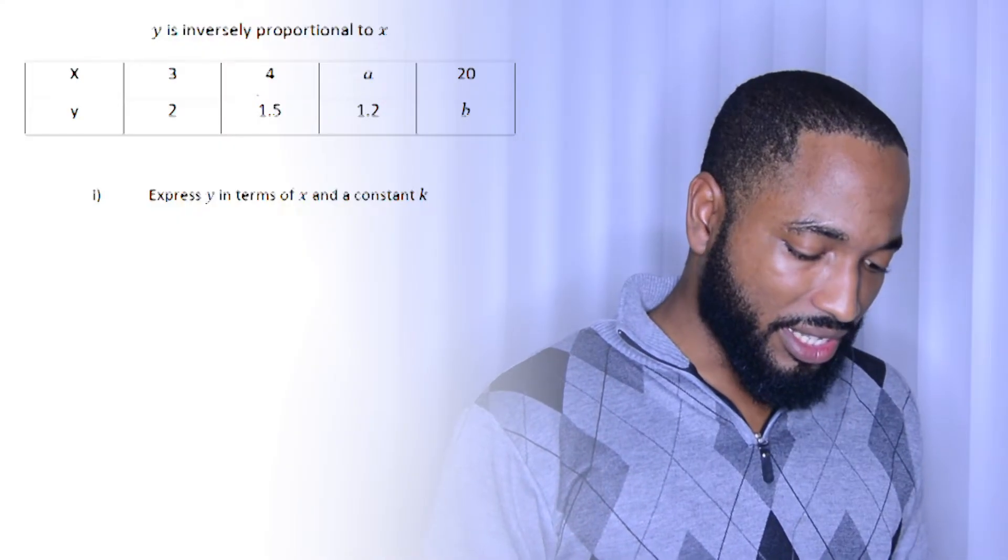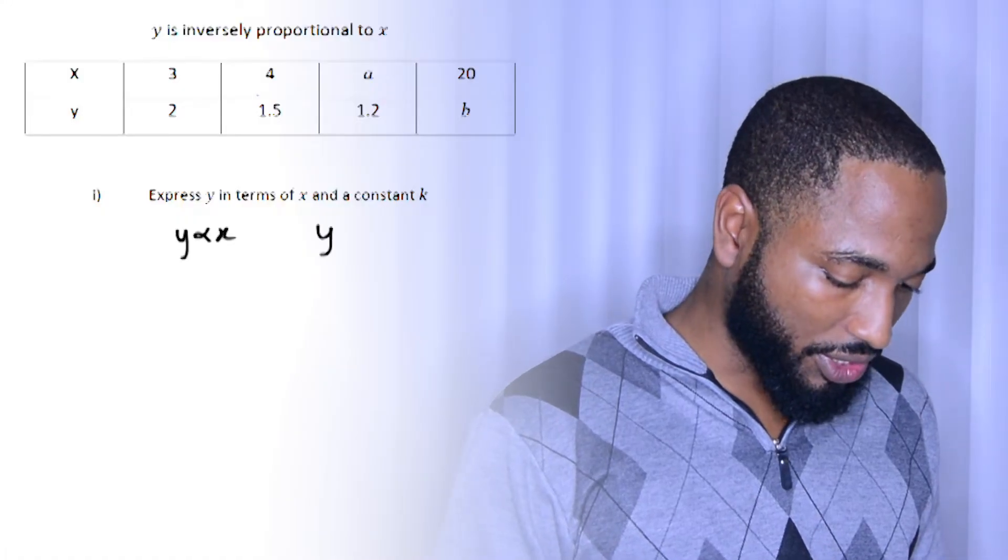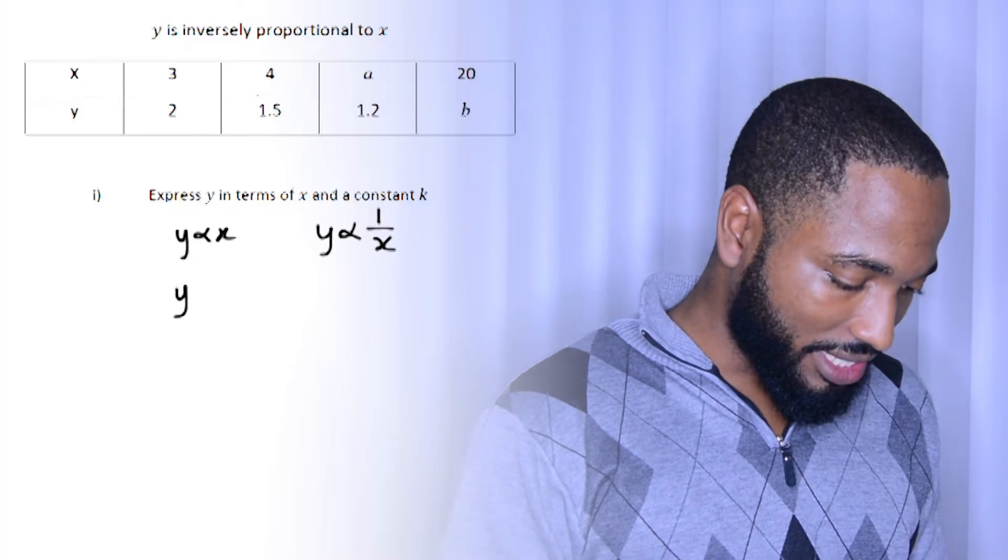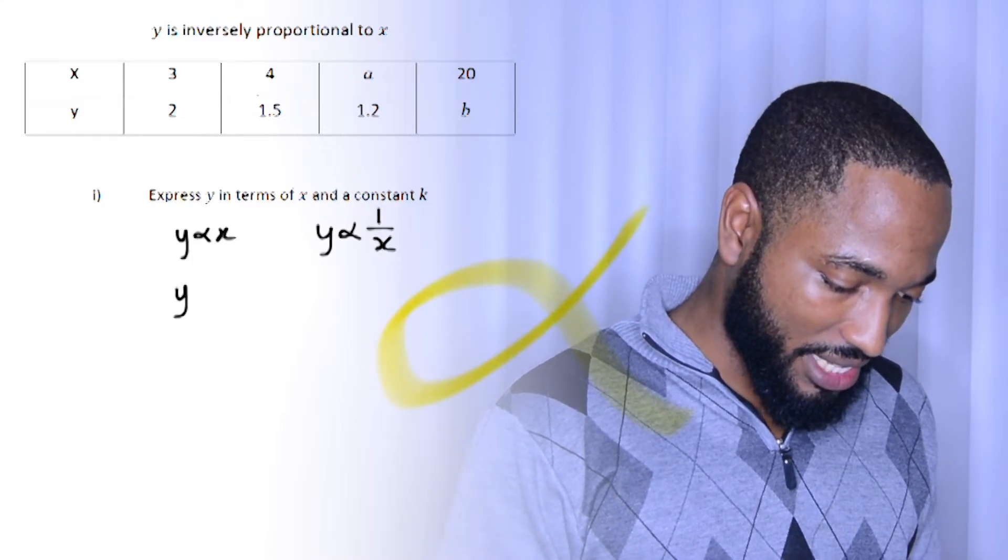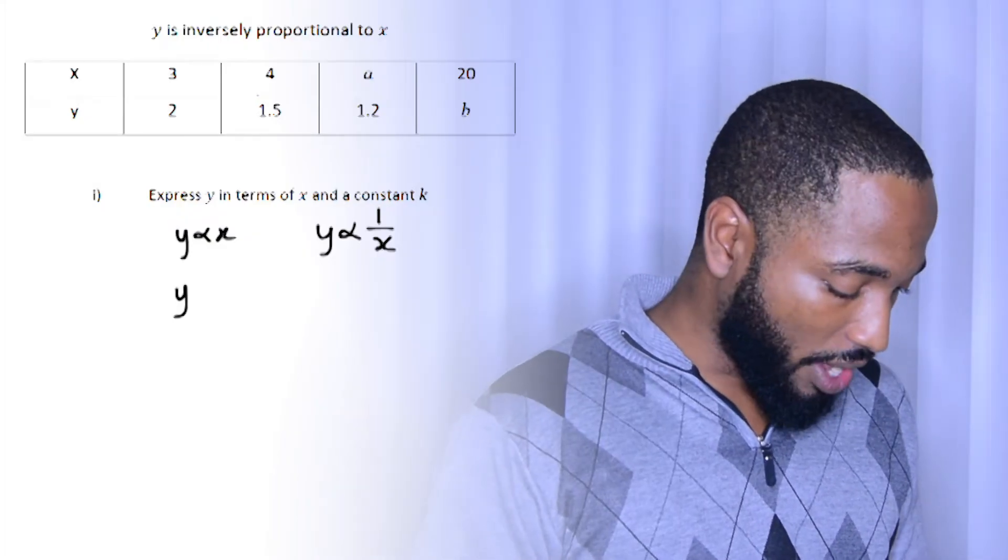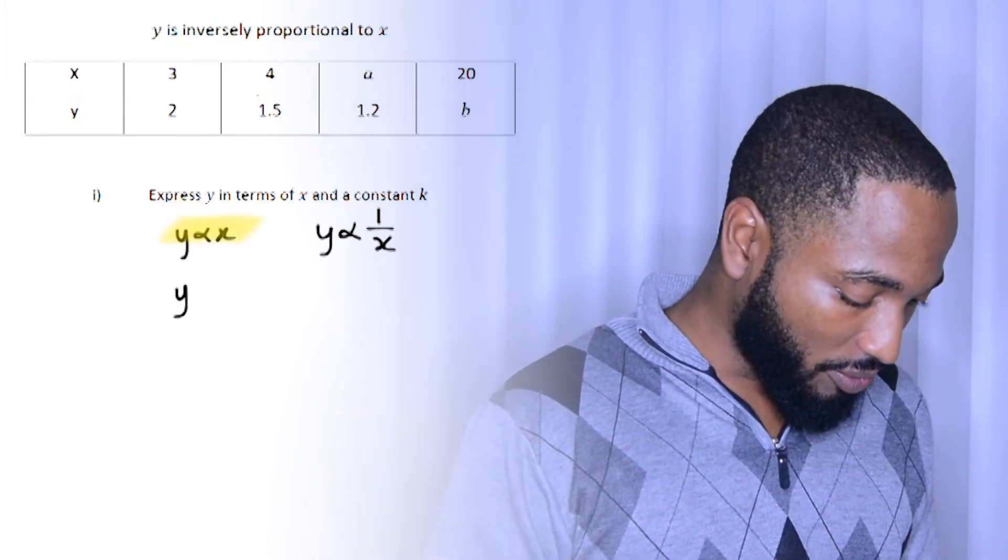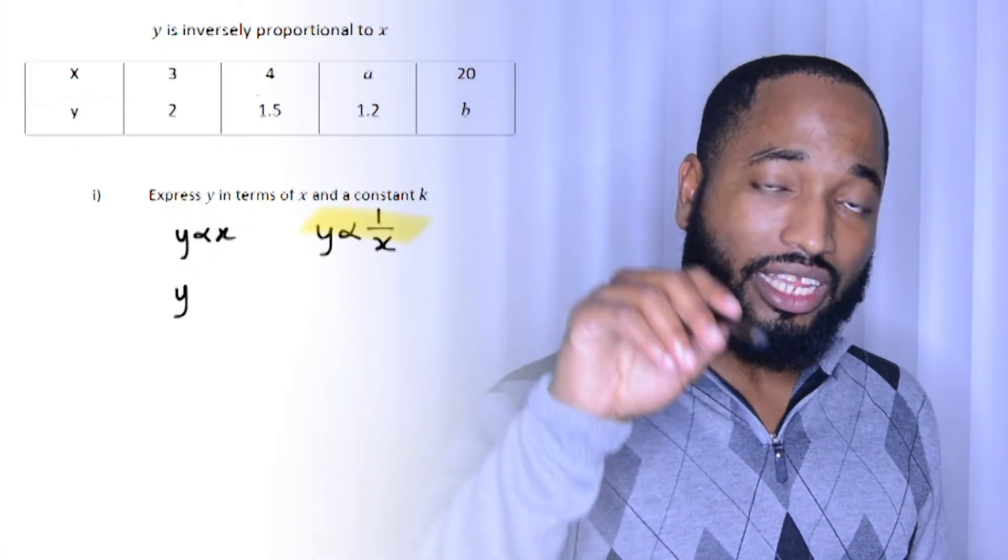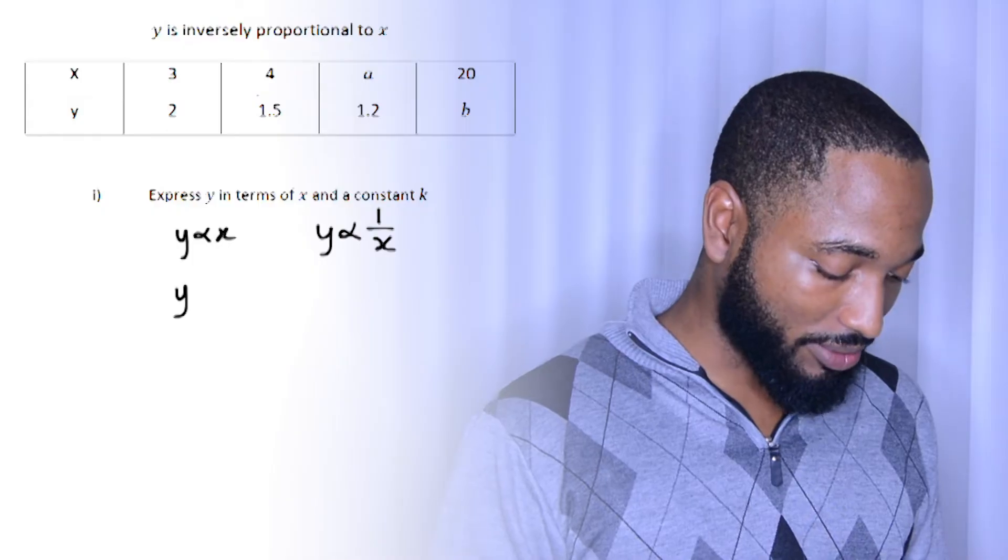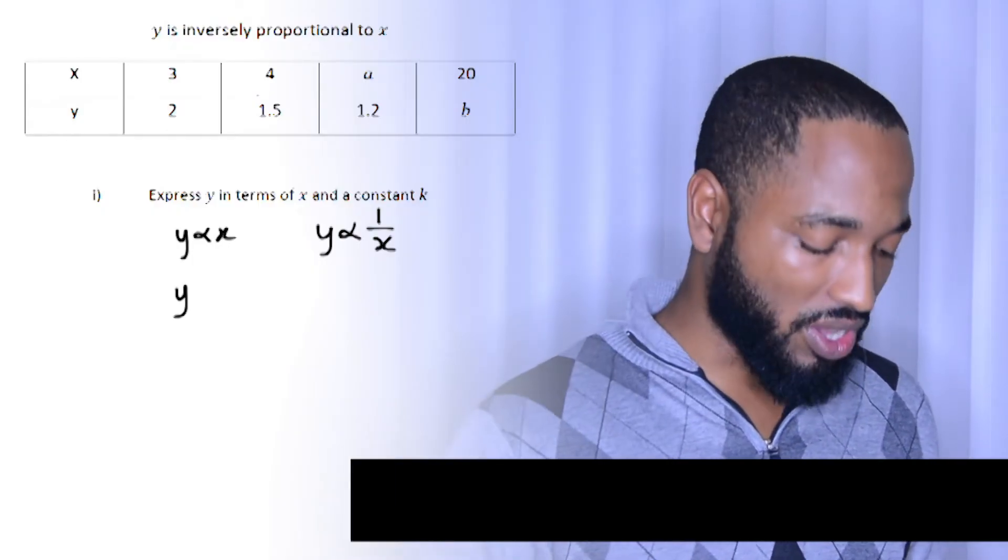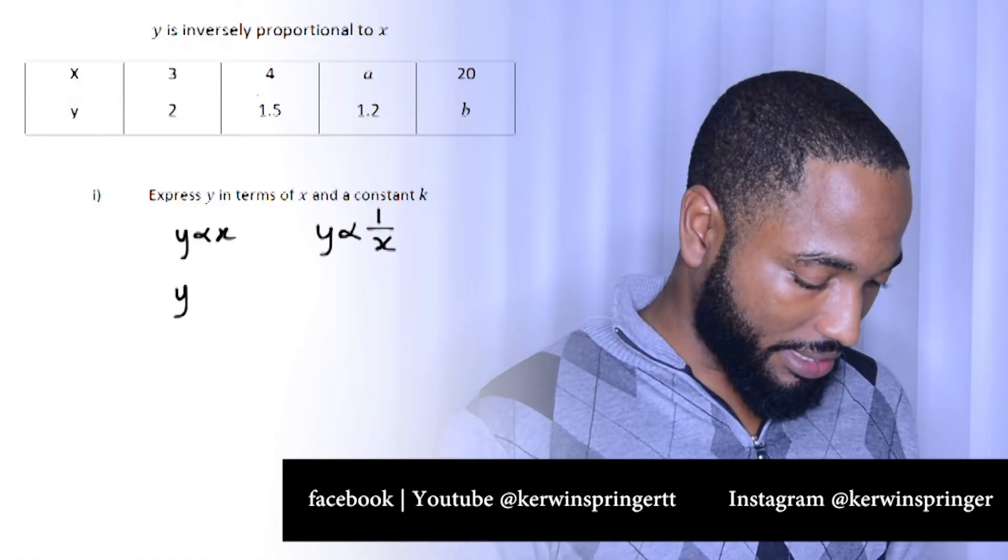Express Y in terms of X and a constant K. So there's two relationships you should know. This little fish sign thing means proportional. That's the sign for proportionality. So Y is proportional to X. So if you want to say Y is inversely proportional to X, you need to use the same fish sign thing, but you'll put 1 over X, which would carry the idea that as Y goes up, X goes down.